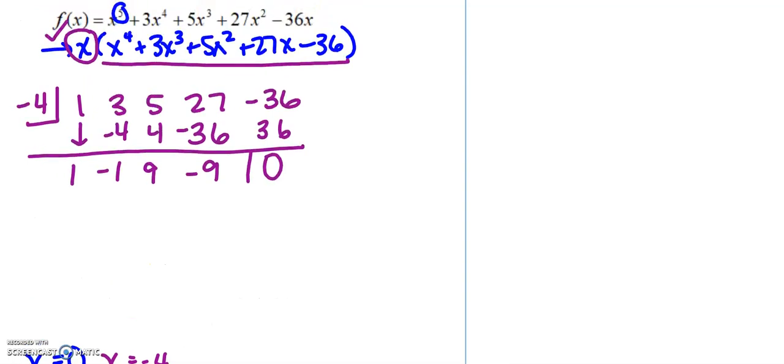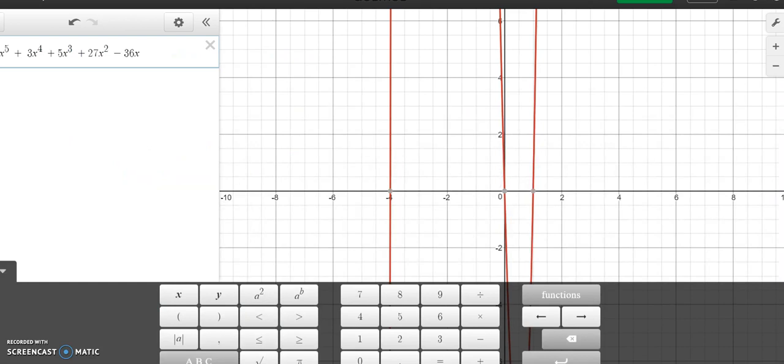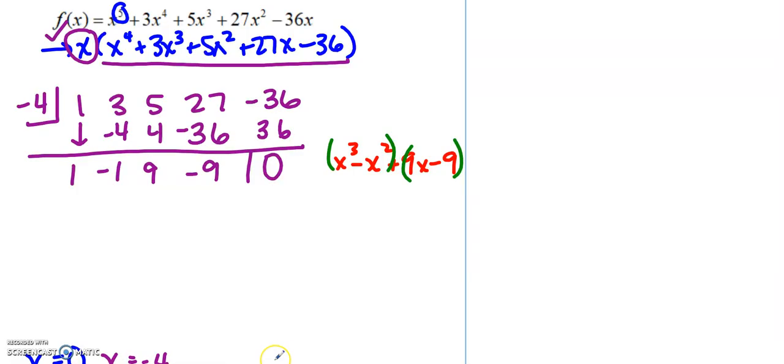So now there's a couple ways I can go from here. I could look at this and recognize that I'm at x to the third minus x squared plus 9x minus 9. And this is going to group pretty nicely, and I could use that method. Or I could go back to that graph and say I also knew that 1 was a 0. So now I can continue on.